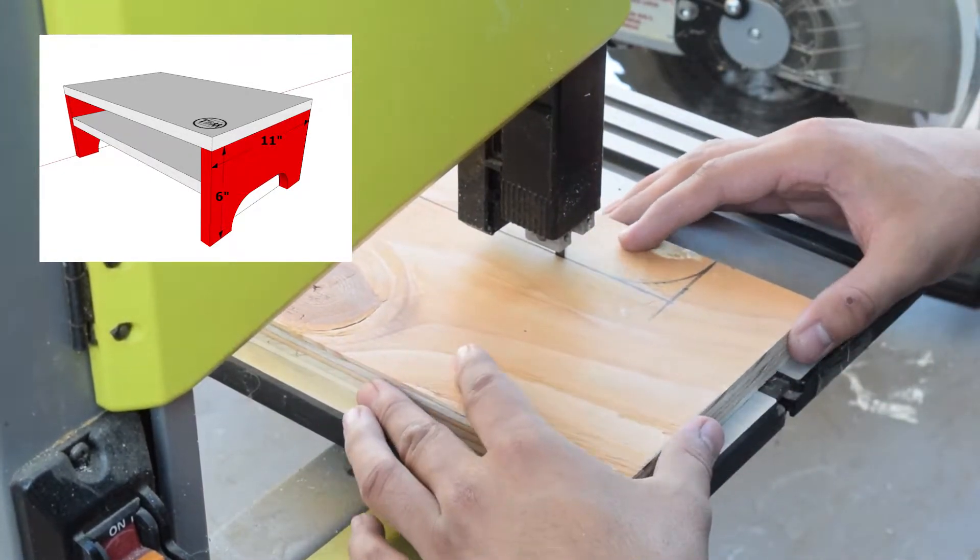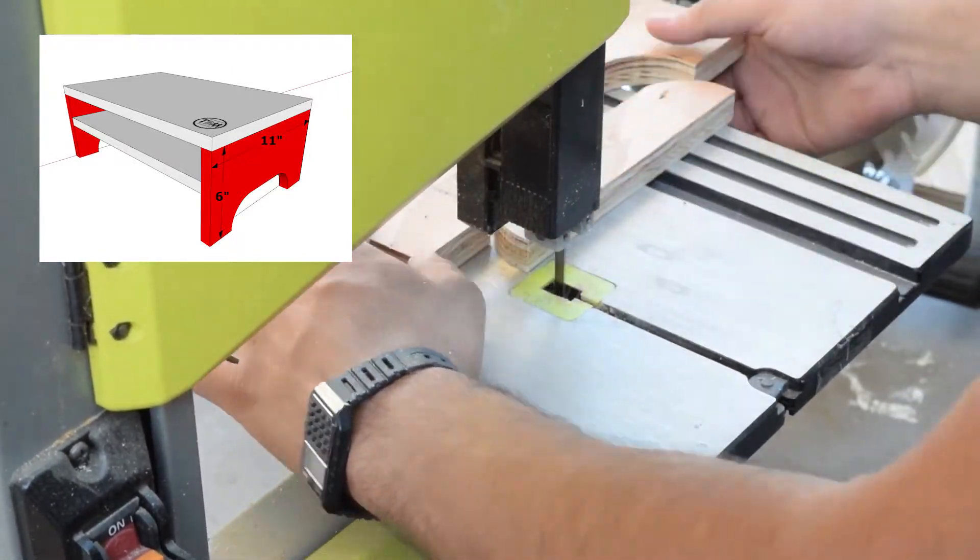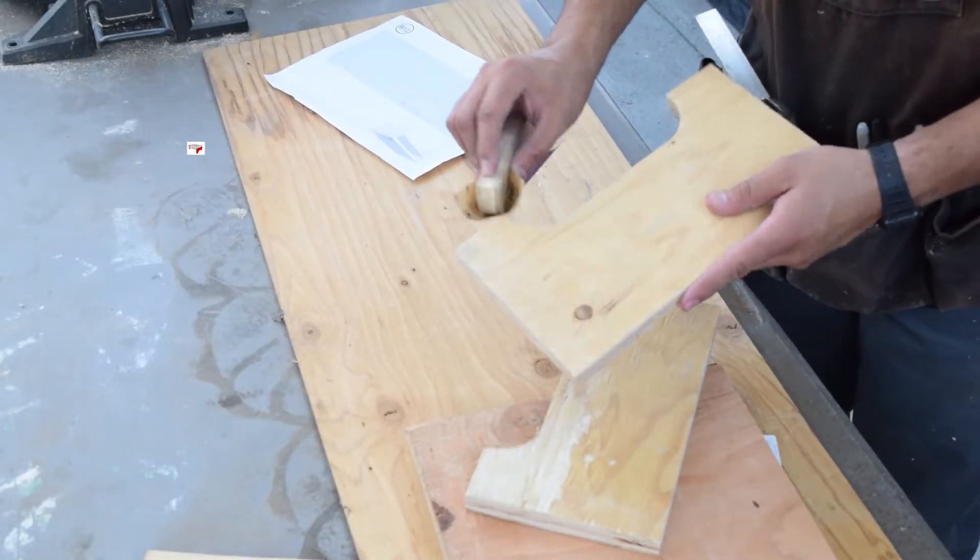I made the curve cut using the bandsaw, but you can also use a simple jigsaw if you decide to add the bottom design.